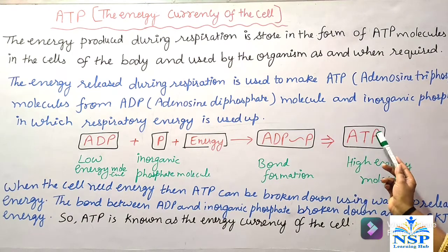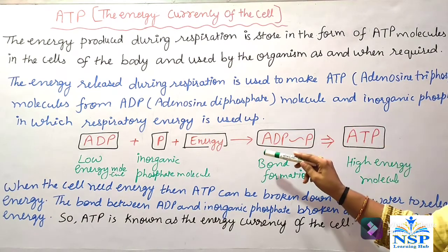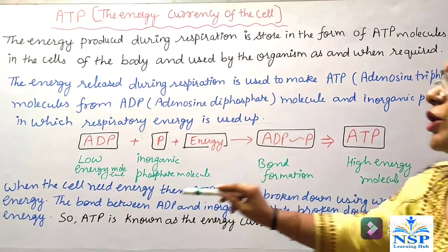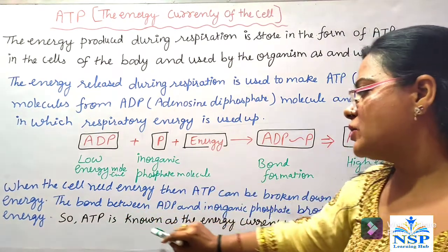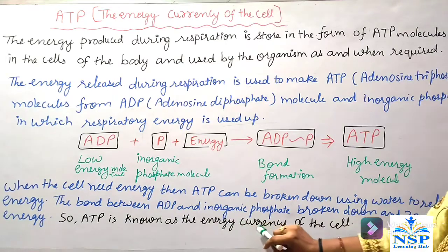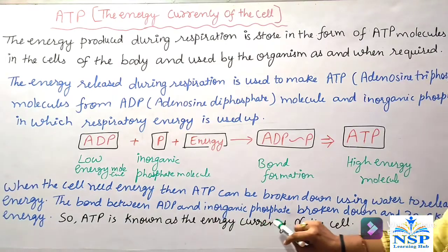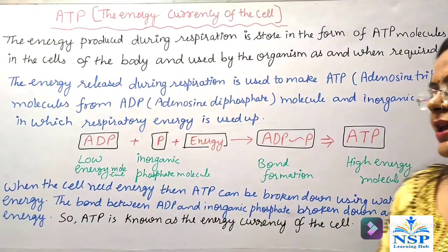So, ATP is known as the energy currency of the cell.